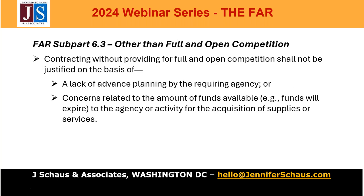CICA also requires that agencies engage in advanced procurement planning and market research to develop specifications in a manner necessary to obtain full and open competition. Poor agency planning cannot give rise to the use of noncompetitive procedures. This precludes agencies from waiting until the end of the fiscal year to procure items and then claiming urgency or only one responsible source because appropriations are about to expire. CICA also bars agencies from obtaining through other agencies goods or services not obtained in compliance with full and open competition.